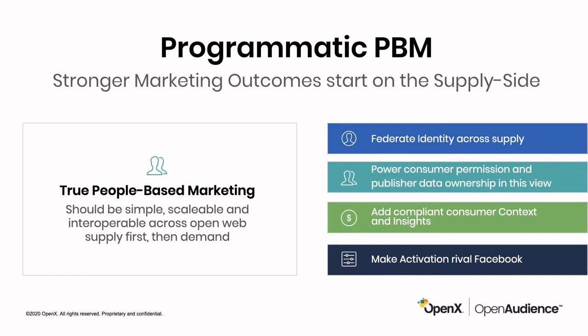People-based marketing should perform like it does in a platform. People shouldn't have to think about myriad identity solutions, myriad data partners, the lossiness that goes with integrating them, or the permission that someone might have with a publisher. They shouldn't have to deal with problems endemic to the supply side. OpenX had a great opportunity to start addressing those with Open Audience — to enliven programmatic people-based marketing and make it feel and look like that in-the-box approach Facebook uses. Open Audience starts with four goals.